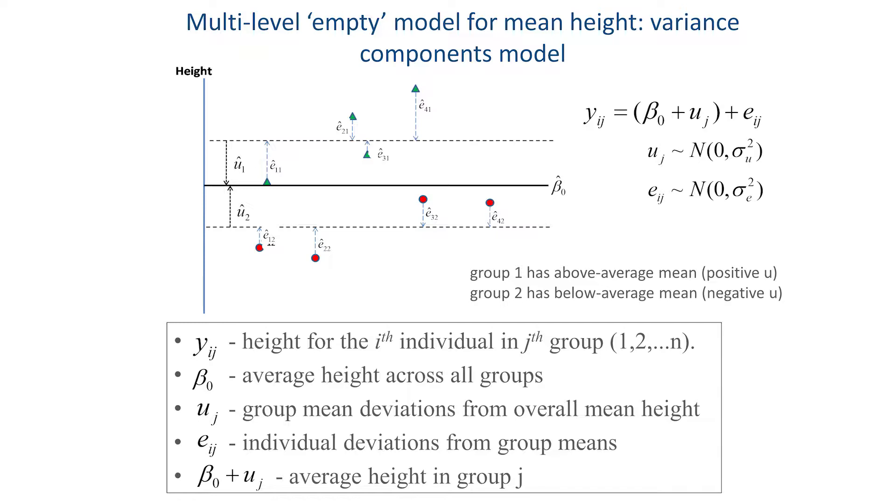So, people from group 1 are generally taller than average, and the average height of family 1 is equal to the overall average, β₀, plus the residual u₁, whilst people from group 2 are generally shorter than average.